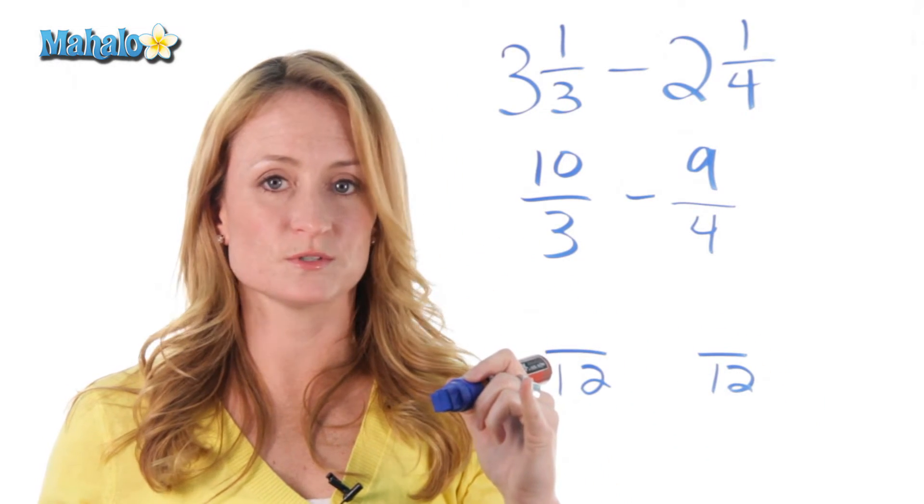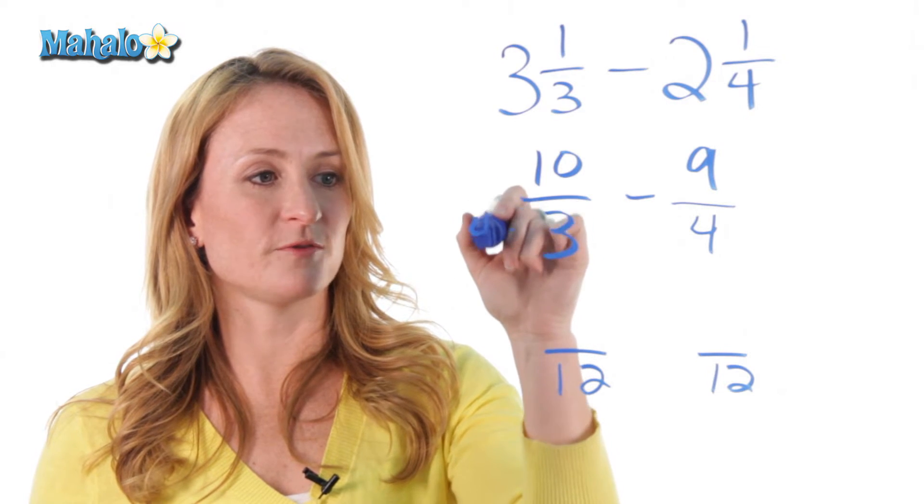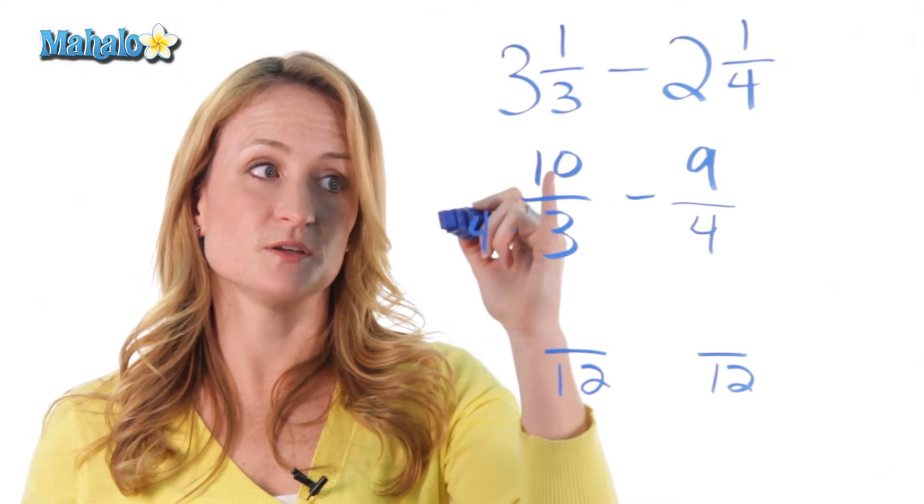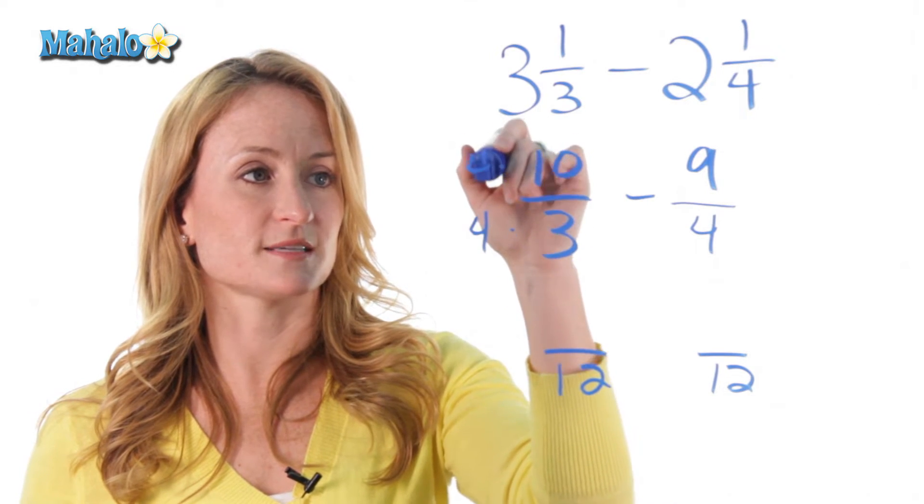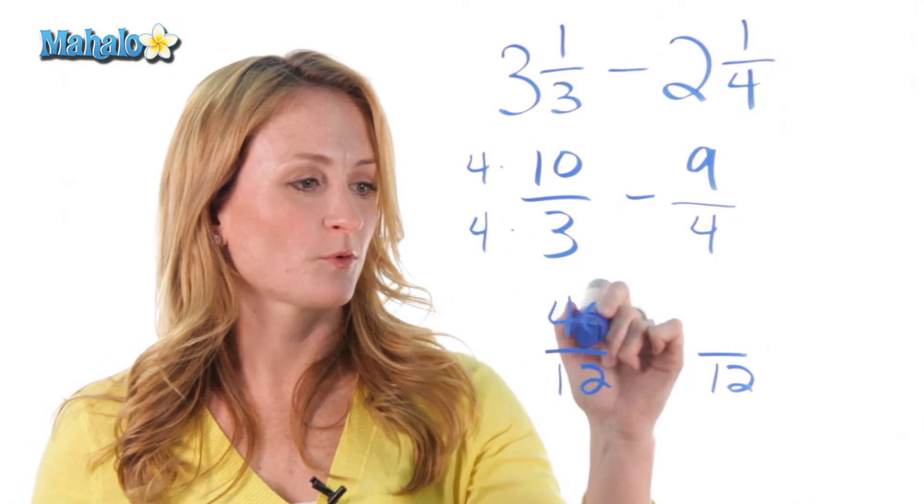So, how did I turn this 3 into a 12? I multiplied it by 4. And remember, what you do to the bottom, you need to do to the top. So, we're going to multiply that times 4. 4 times 10 is 40.